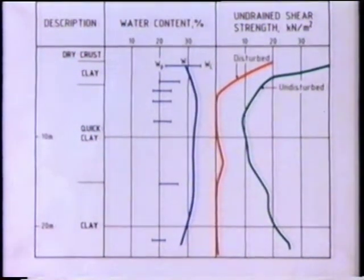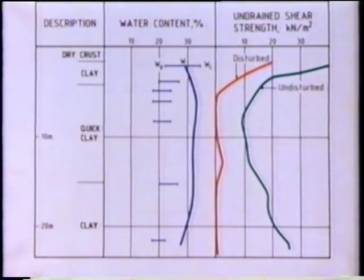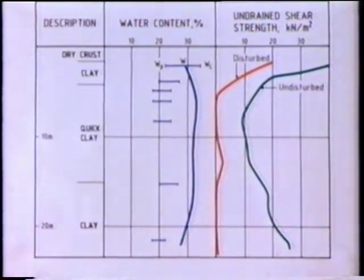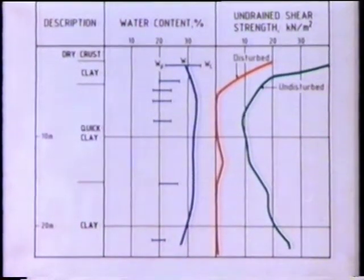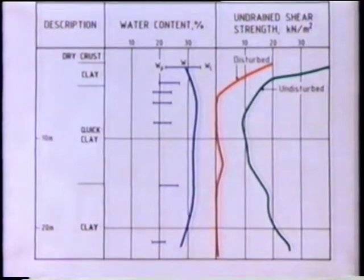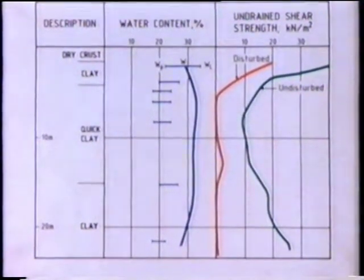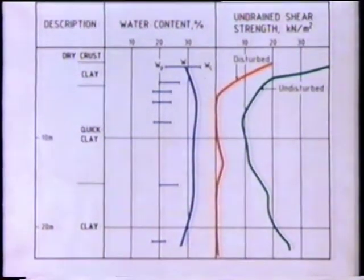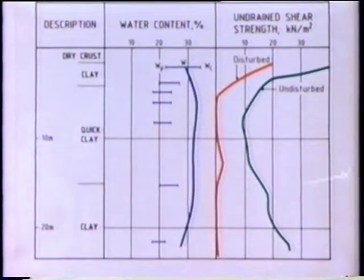This is a typical geotechnical profile from Rissa. The blue line shows an average natural water content of about 30%. It should be noted that in the zone of quick clay, the liquid limit is 5-10% lower than the in-situ water content. The green curve shows the vein shear strength and the red curve the remoulded shear strength.